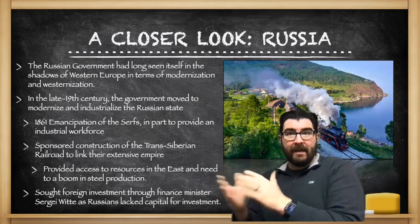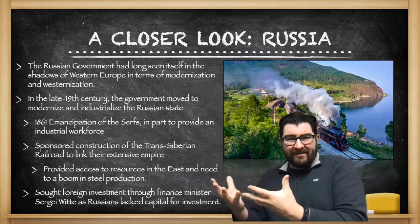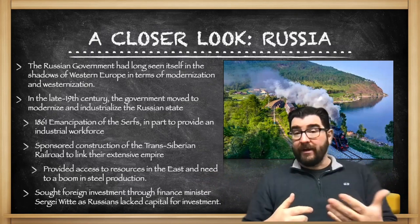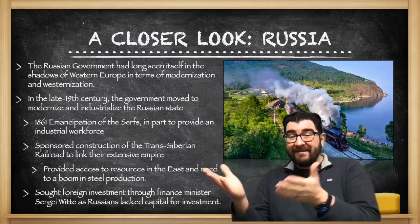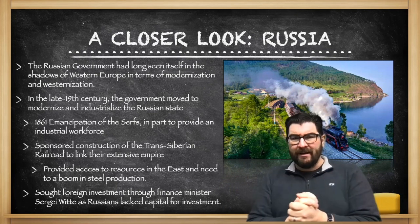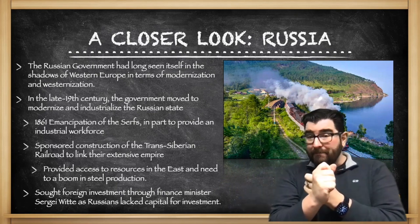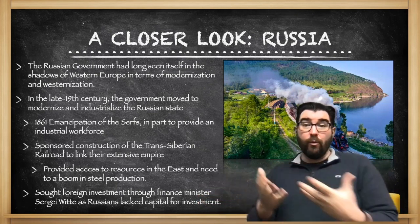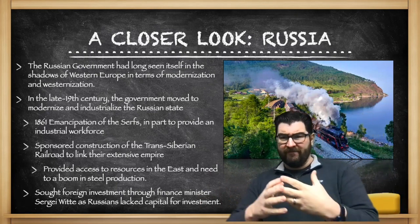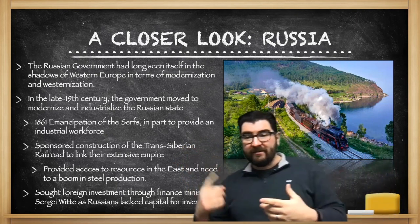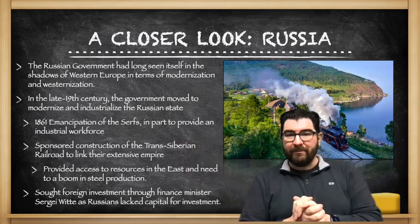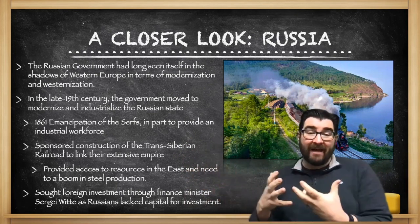Russia is another country that had been lagging behind Western Europe and has long looked at itself in the shadows of Western European developments. Peter the Great's great push was to Westernize Russia, and this continues in the 19th century where the Tsarist government will move to modernize and industrialize the Russian state. In 1861, the serfs were emancipated, in part to provide an industrial workforce for growing Russian cities. The Russian government will sponsor construction of vast infrastructure projects like the Trans-Siberian Railroad.